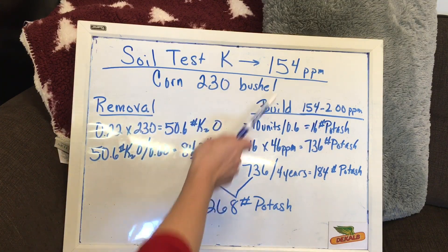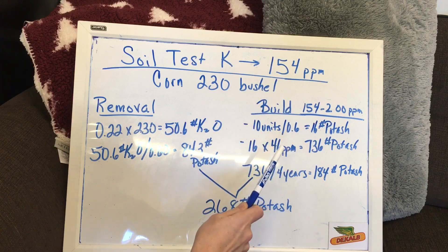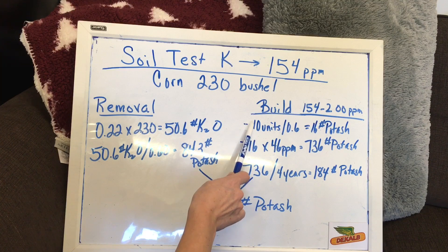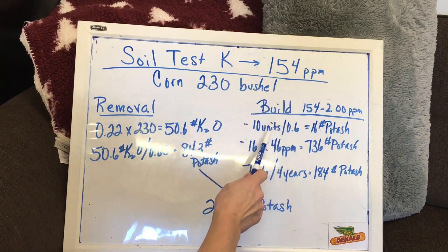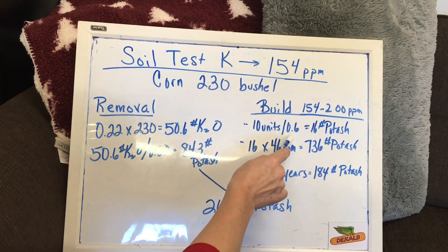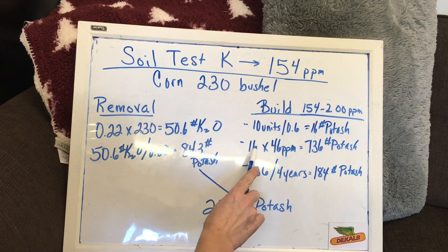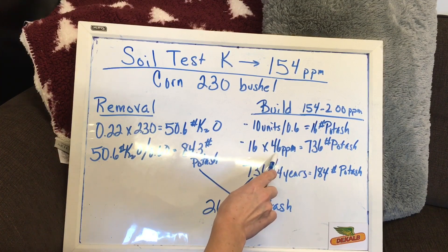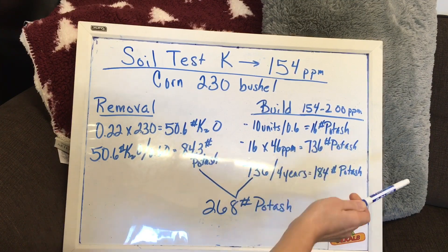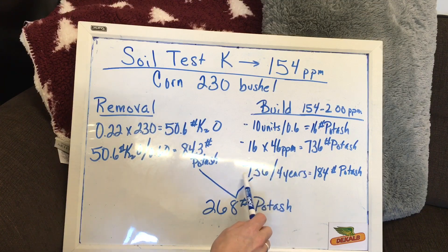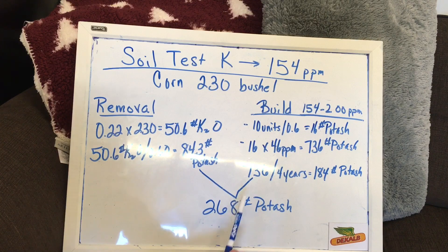But that's only part of it, because we also want to build our soil test K up to 200 parts per million, going from 154 to 200. On average, it takes 10 units of K2O to increase our parts per million by one. Converting to pounds of fertilizer: 10 divided by 0.60 gives us 16 pounds of potash to increase our soil test by one part per million. So 16 pounds of potash multiplied by 46 parts per million — the increase needed to reach 200 — is 736 pounds of potash. We spread that over four years: 736 divided by 4 is 184 pounds per year. Adding removal and build together gives us 268 pounds of potash.